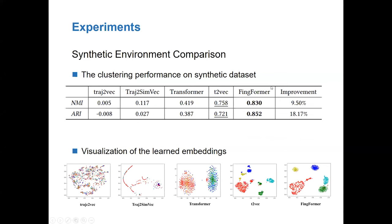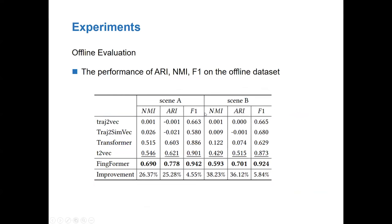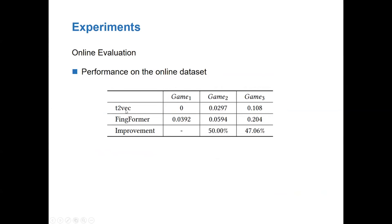As the results show, our model stands out in synthetic environments. The visualization of the learned embeddings proves that our model can not only distinguish between normal and cheating samples, but also distinguish between different types of cheating samples. In the offline evaluation, our model also performs much better than other methods. The results from scene B show that our model is generic to different scenes of the same game. In the online evaluation, we compare our model with the best-performing baseline, T2-Rect. When applied to different games, our model achieves much better performance than T2-Rect and can find cheating samples from the massive daily data flow.